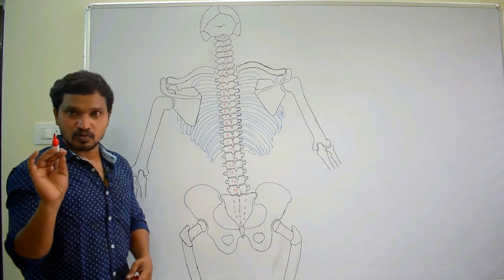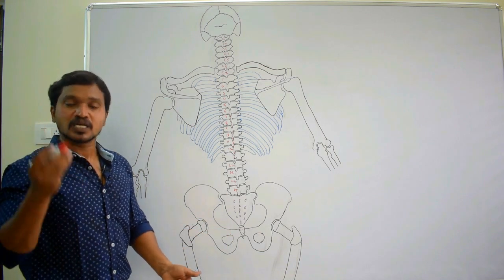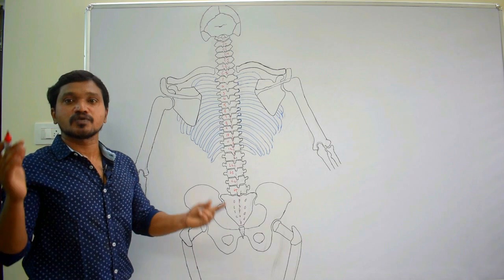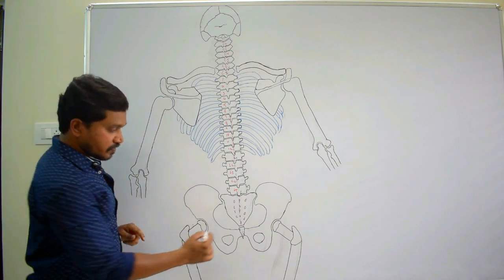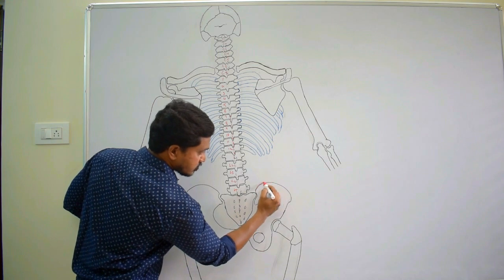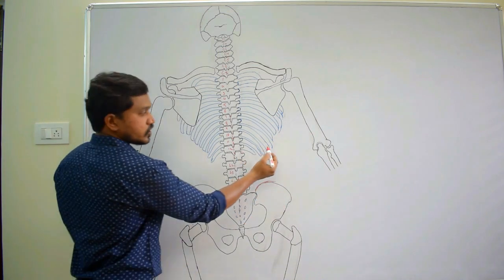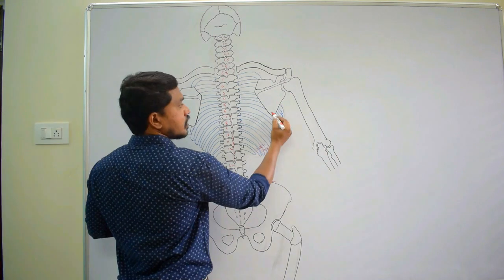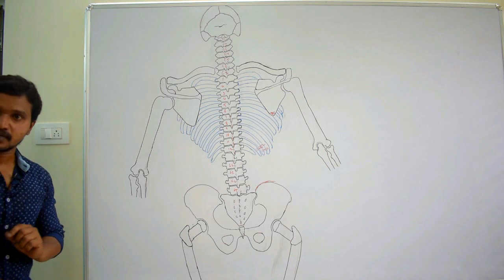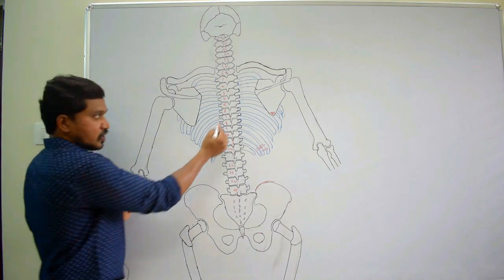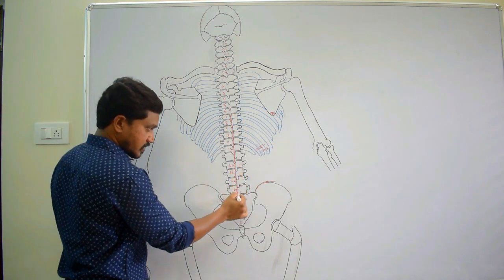Remember: at the lower part, it becomes an aponeurosis and fuses with the posterior layer of thoracolumbar fascia. Then iliac crest - it is taking origin here also. After that, lower 4 to 5 ribs and inferior angle of scapula. These are the origins. So it is having a very wide origin.